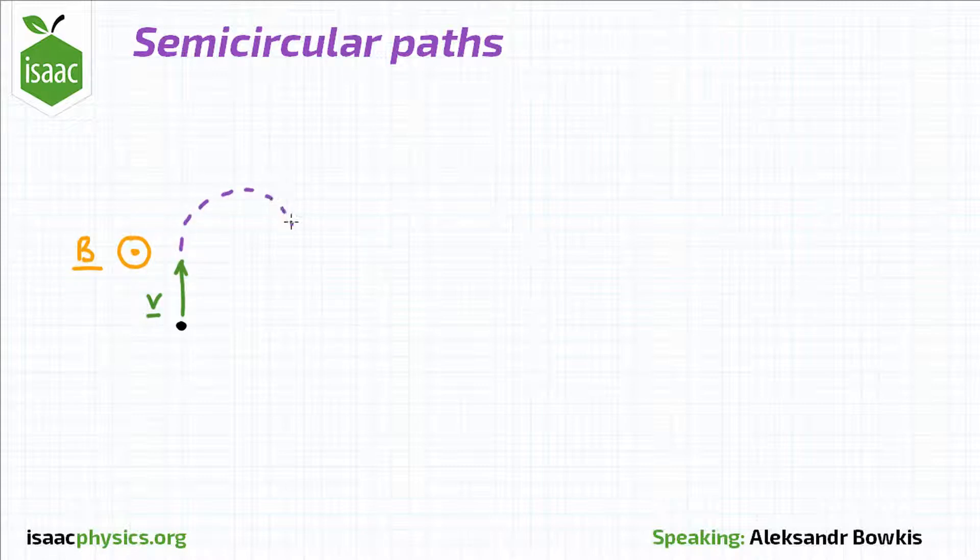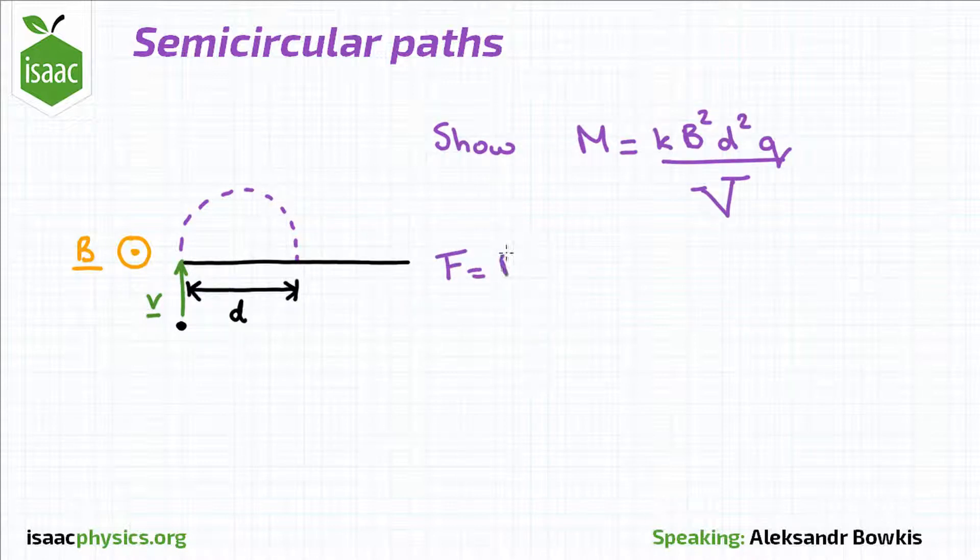The particle travels in a semicircular path before striking a plate a distance d away from the point it entered the magnetic field. Because b and v are at right angles,